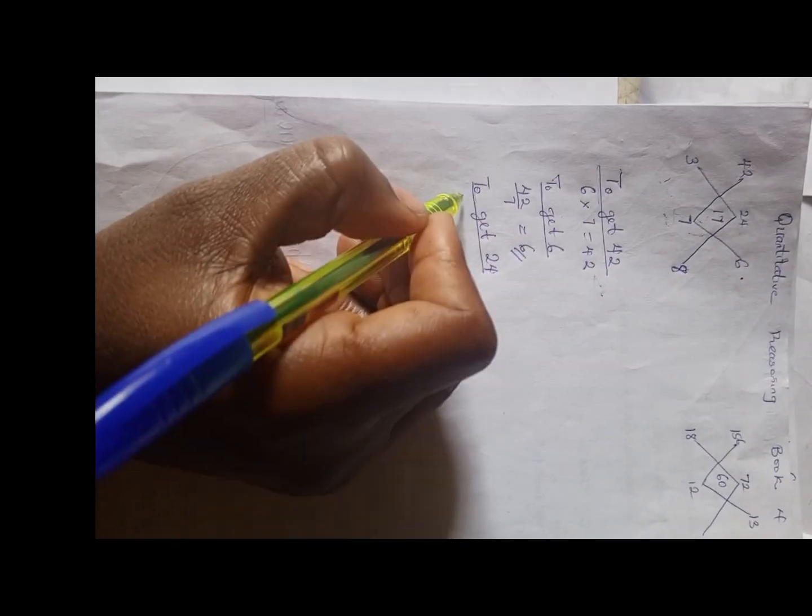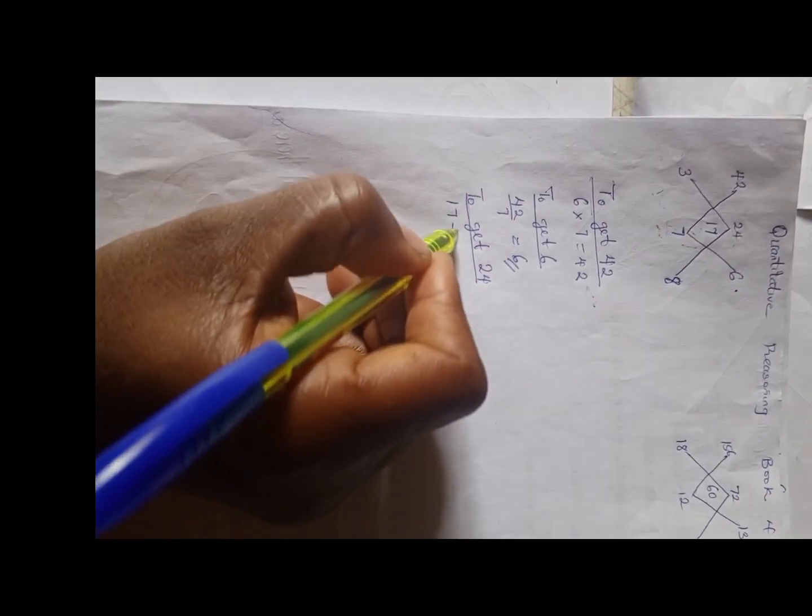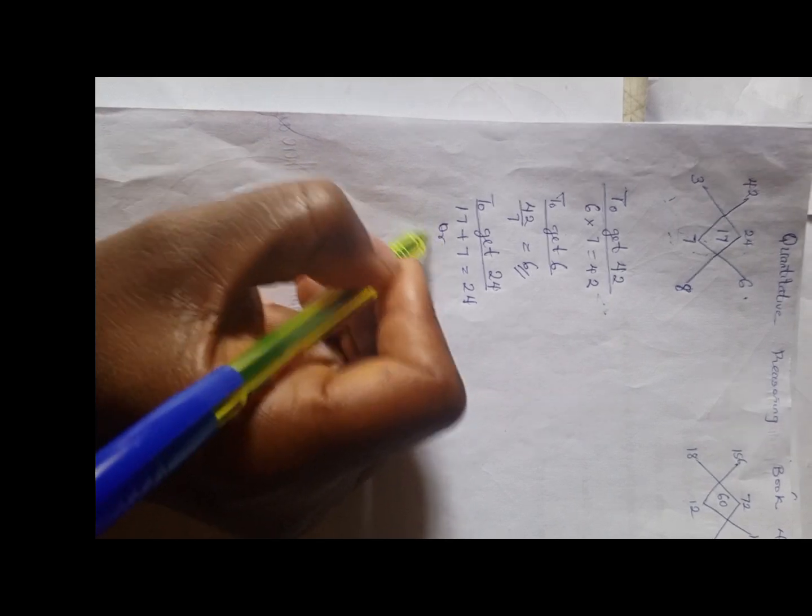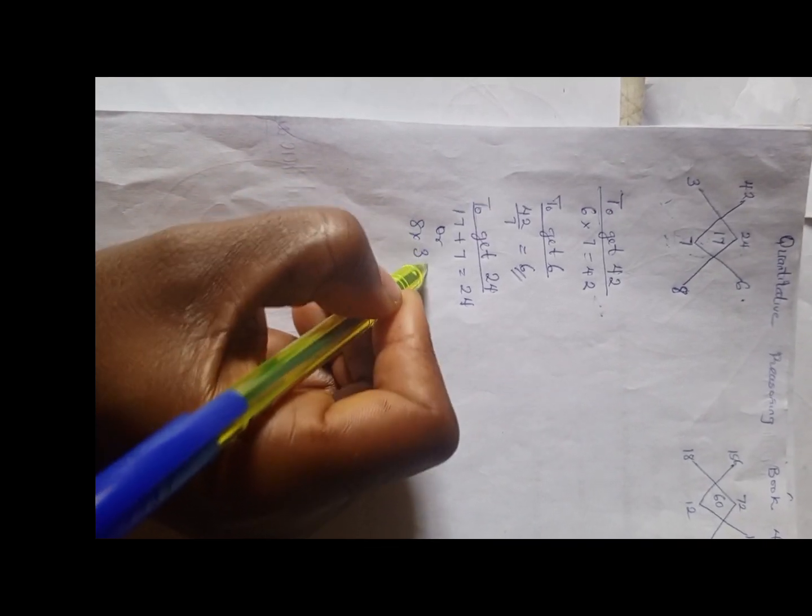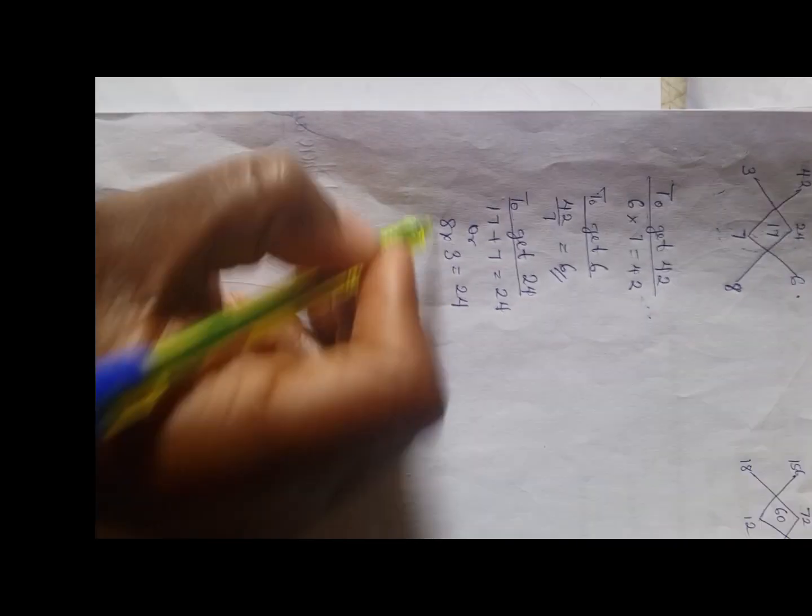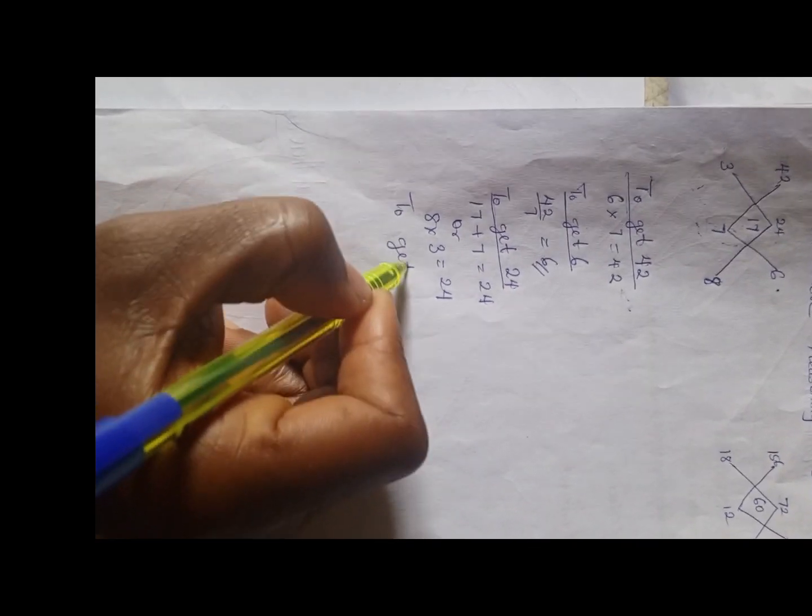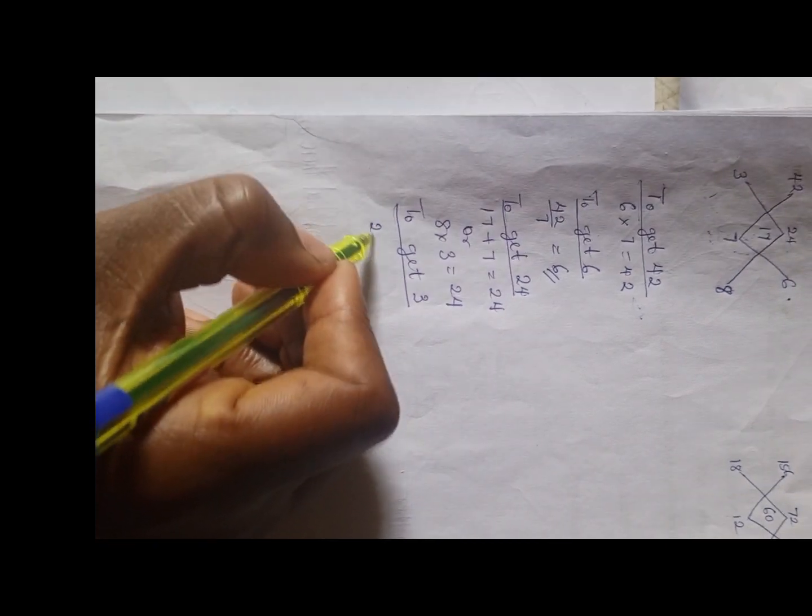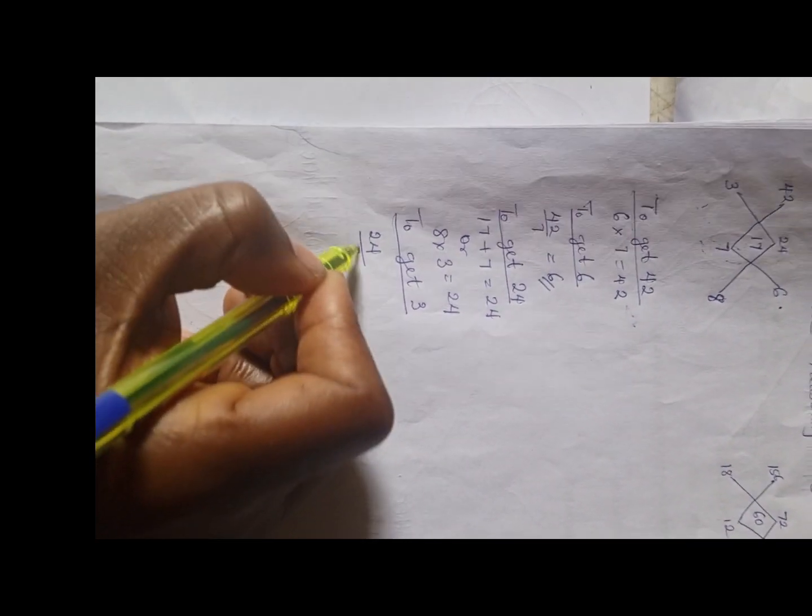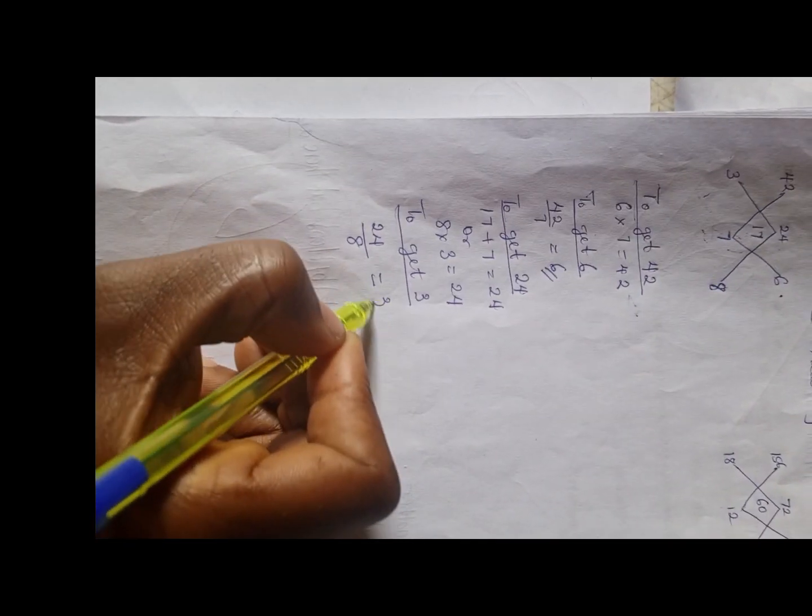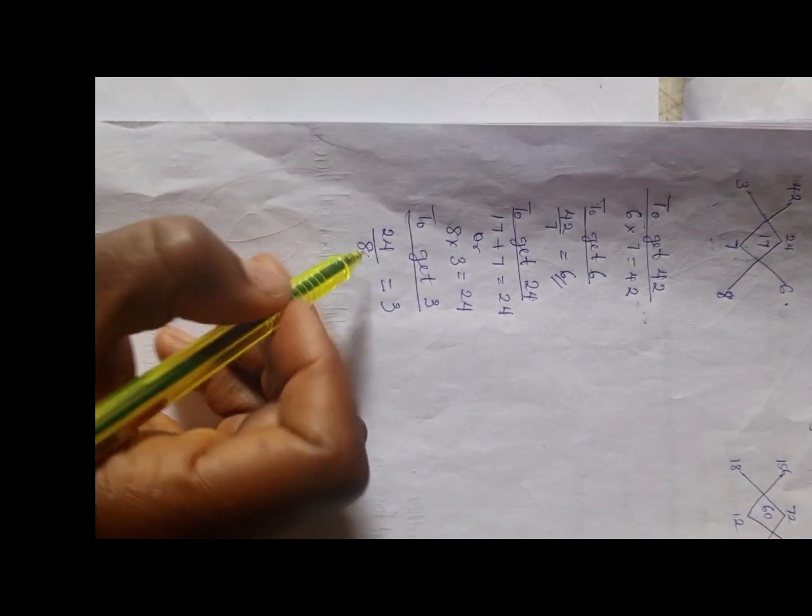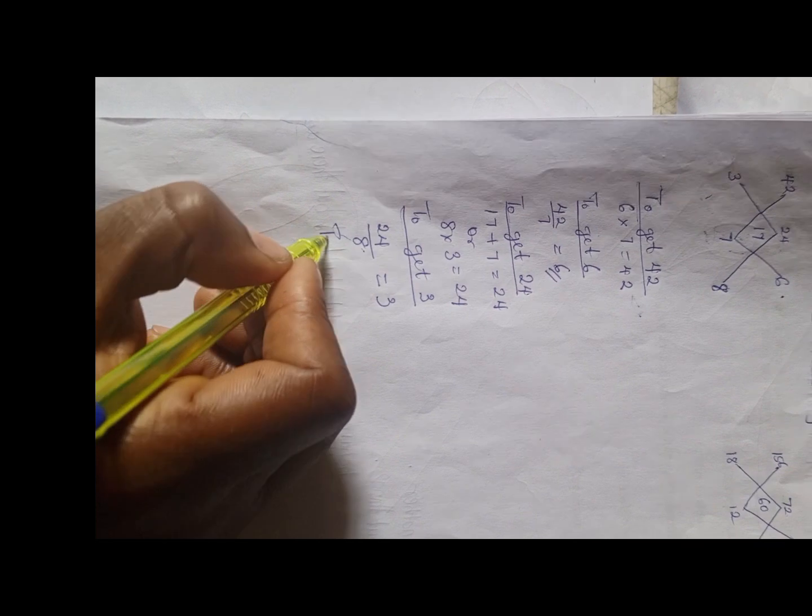To get 24, you can have 17 plus 7 is 24, or you can also say 8 times 3 is 24. Then to get 3, you can have 24 divided by 8 is 3.